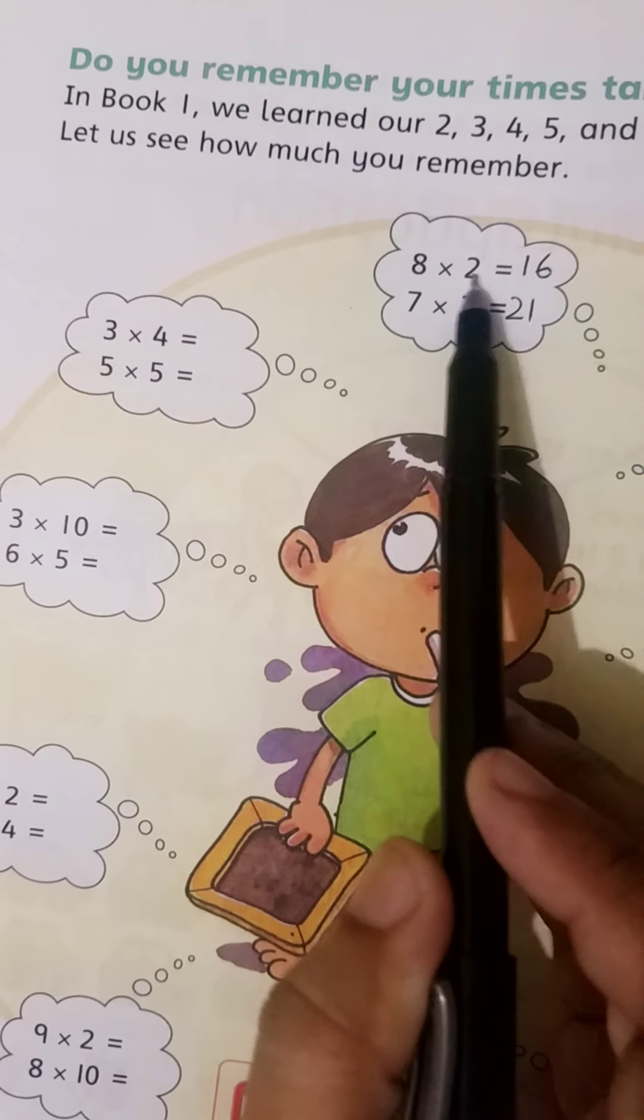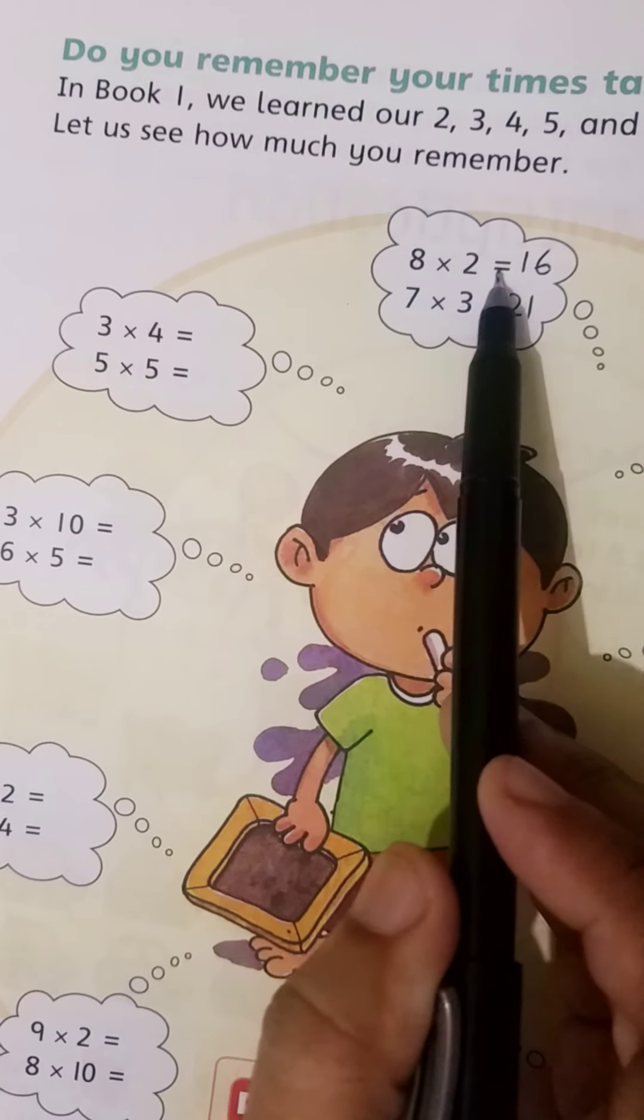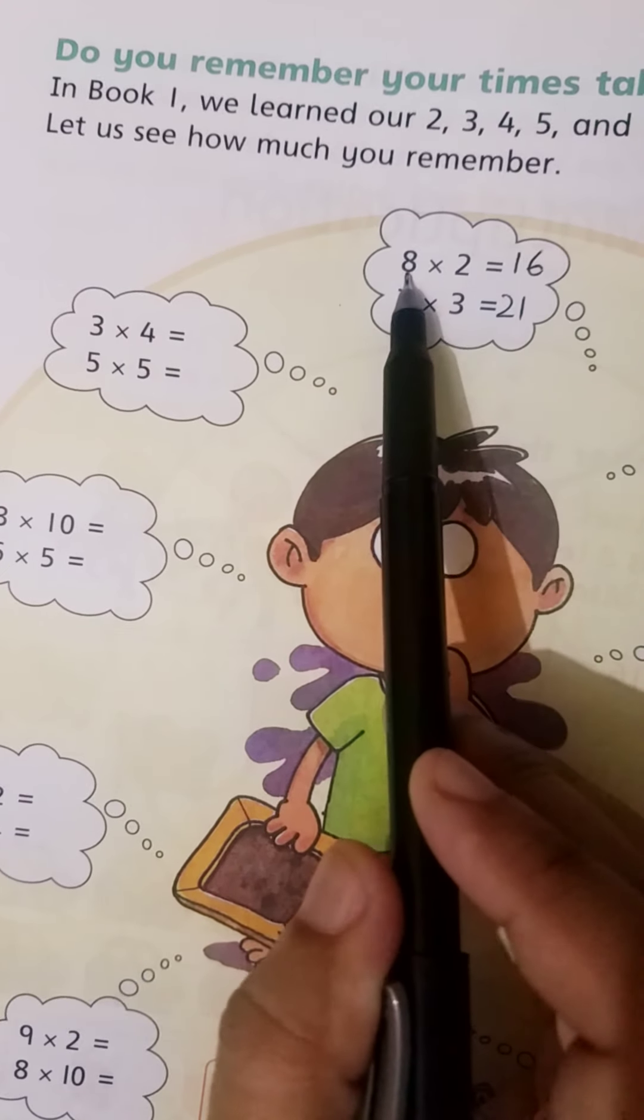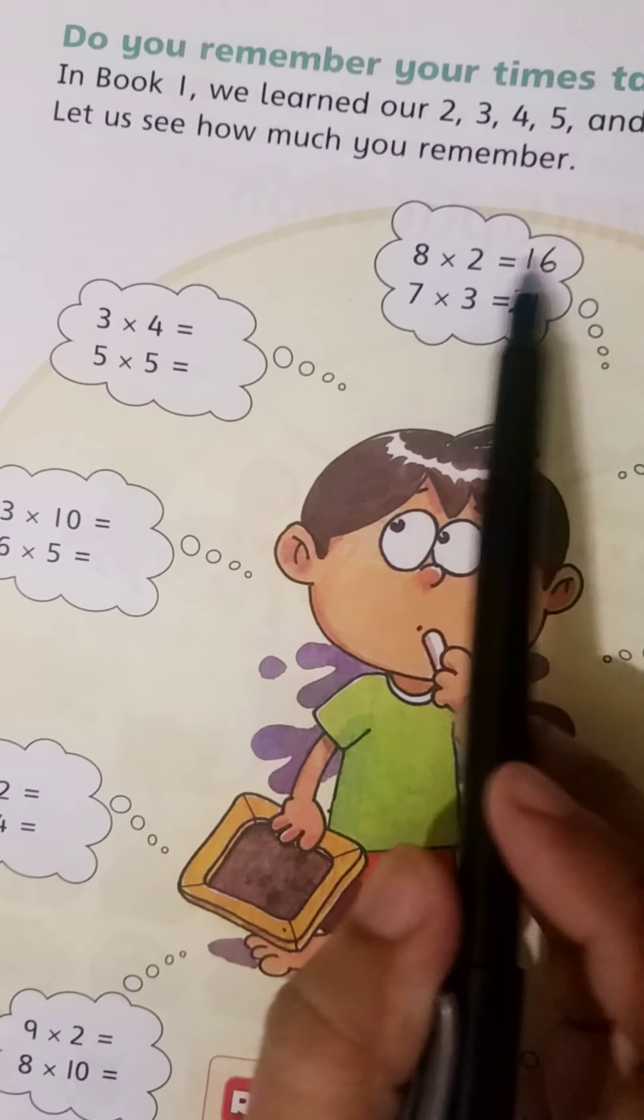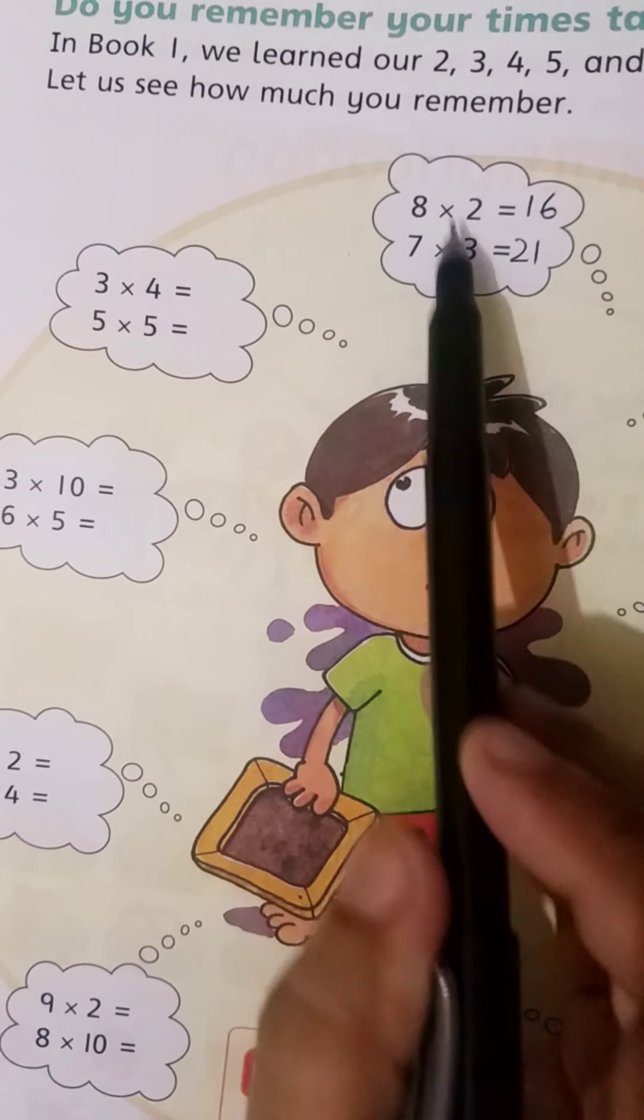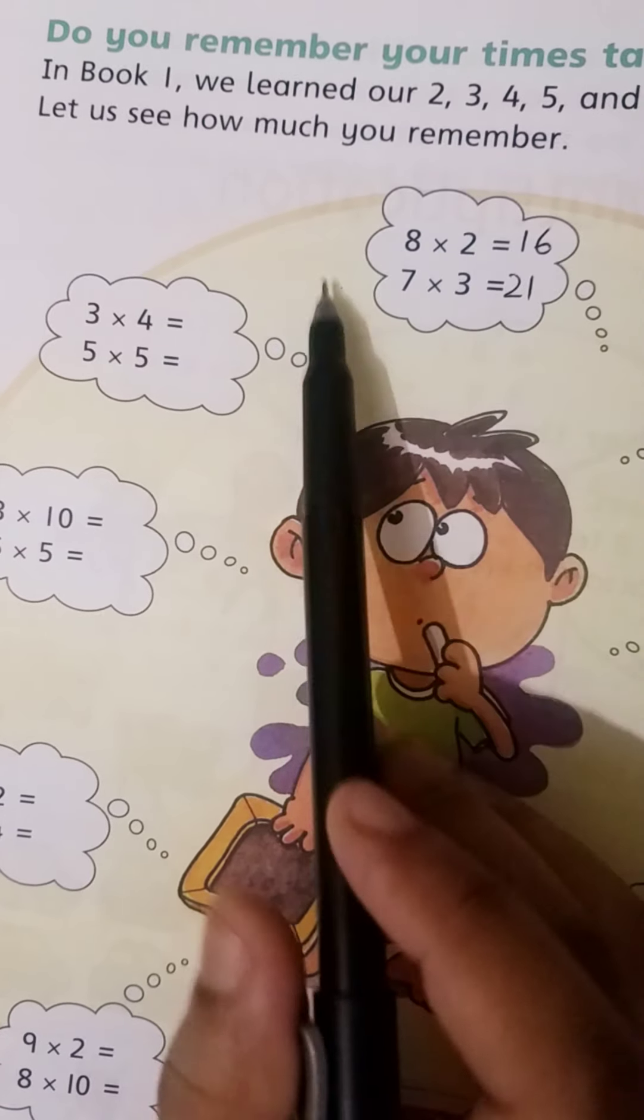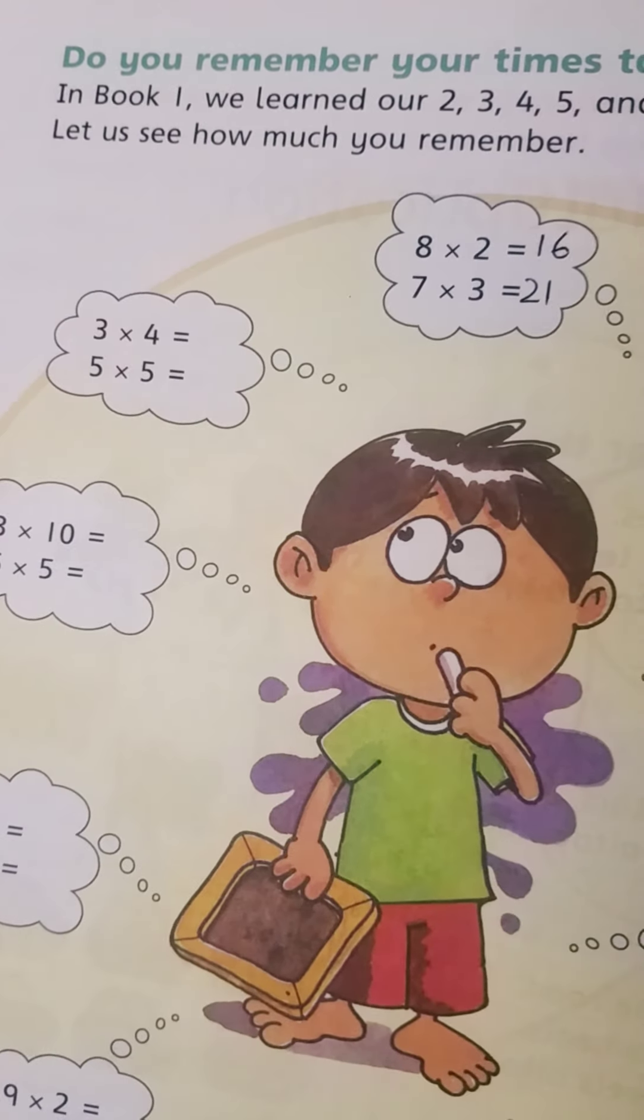First is 8 times 2. 8 2's are 16. 16 is the product of these two numbers. 7 times 3: 7 3's are 21. Write 21 here. Similarly, solve all questions and remember...